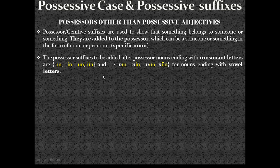And if the possessor nouns end with a vowel, we will be using buffer 'n' letter. Remember: third person singular personal pronoun 'o' — to apply the possessor suffix 'un', we were using buffer 'n', giving 'onun'. So this time for possessor nouns ending with vowel letters, we will be using buffer 'n' letter: making 'ın' as 'nın', making 'in' as 'nin', making 'un' as 'nun', making 'ün' as 'nün'.